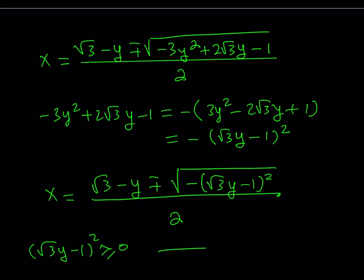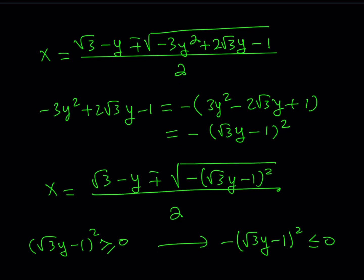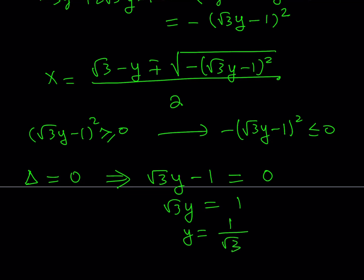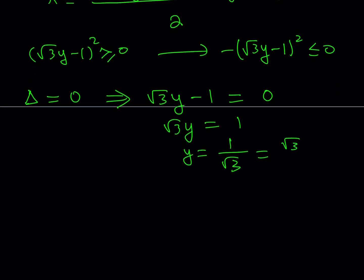Now, (root 3 y minus 1) squared is non-negative, so when multiplied by negative 1 it becomes non-positive — it can't be positive. For real solutions, the discriminant must be greater than or equal to 0. But it's less than or equal to 0, which means it must equal exactly 0. So the discriminant equals 0. Setting negative (root 3 y minus 1) squared equal to 0 gives root 3 y equals 1, so y equals 1 over root 3, which is square root of 3 over 3.